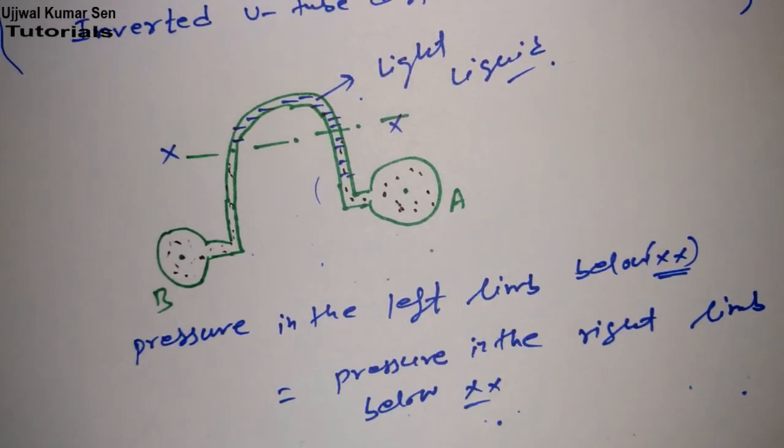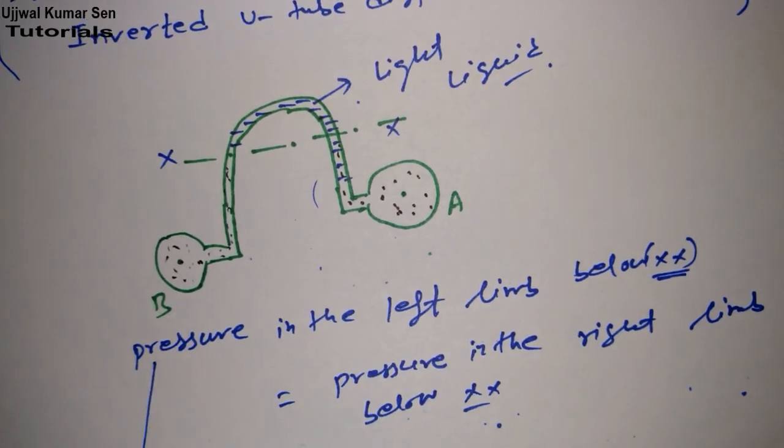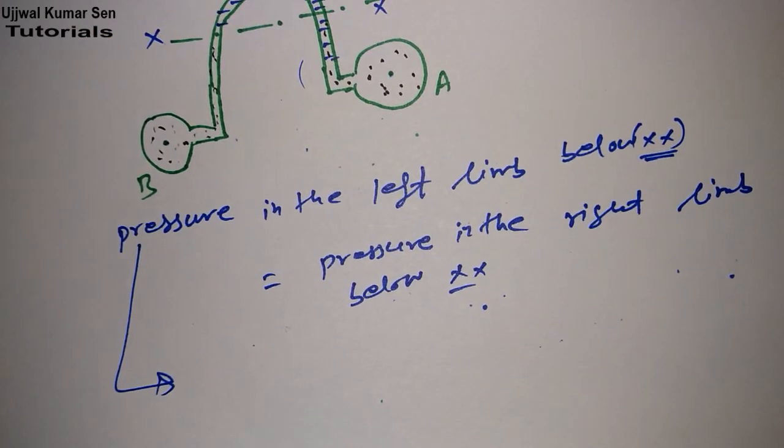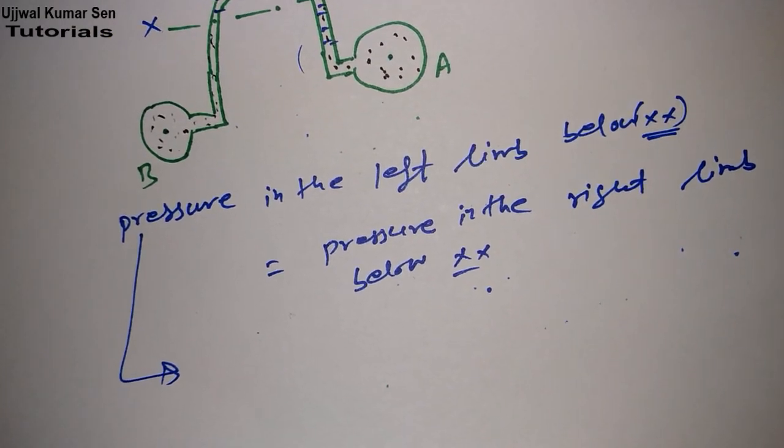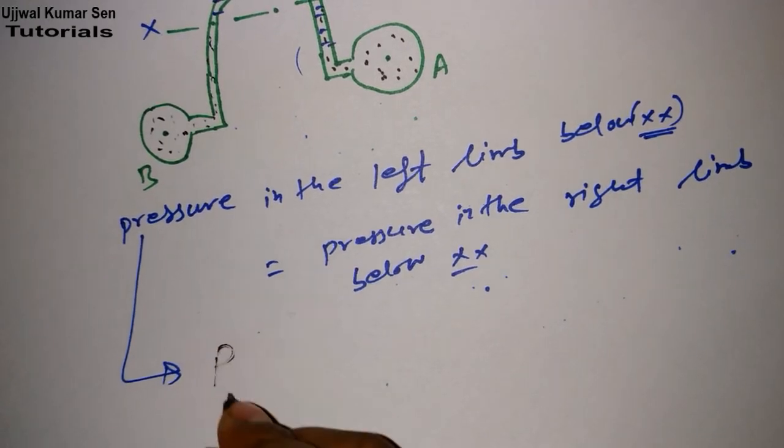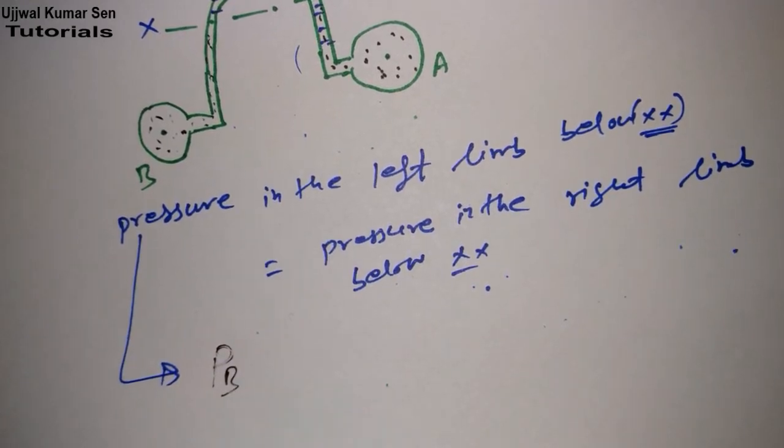We have to write the equation for pressure in the left line. What I'm going to do right now is really important - just try to understand what I would write. Here you go: pressure at B, let's say P_B.